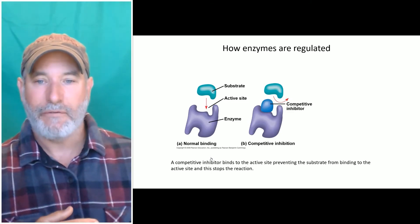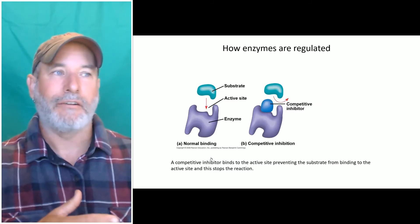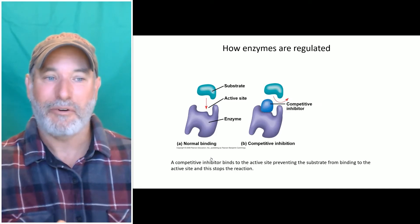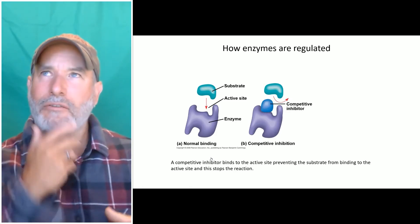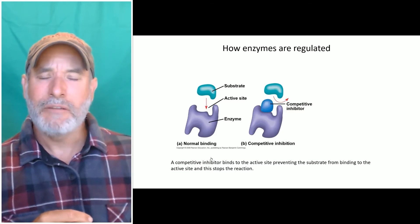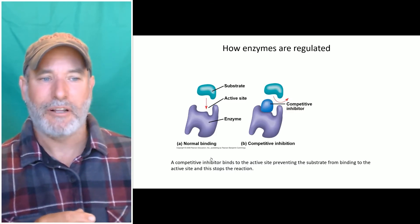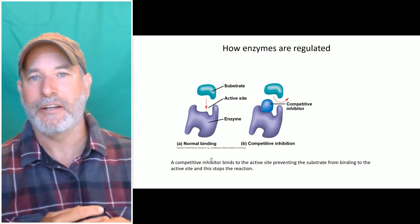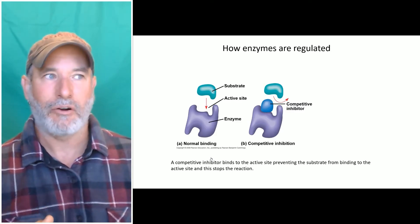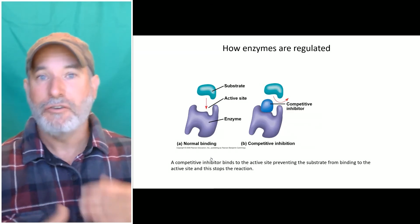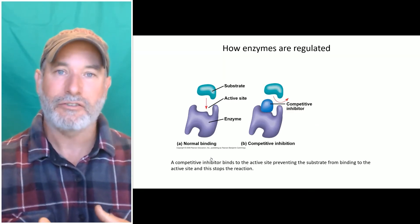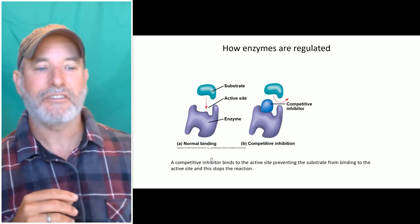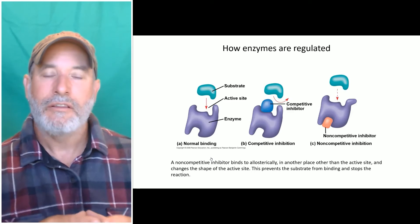One way is to have a competitive inhibitor. A lot of times your competitive inhibitor is the product of your metabolic pathway. You can imagine the products of your metabolic pathway will actually bind into the active site and that prevents your reactants from getting in there, and that slows down the rate of your reaction. Then as you use up the molecule you're trying to make, there's less of it, the enzyme becomes more active again. So that's competitive inhibition.